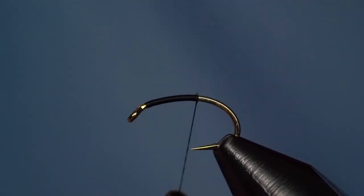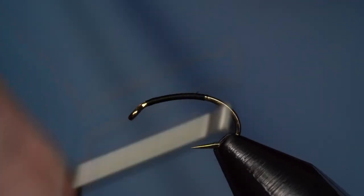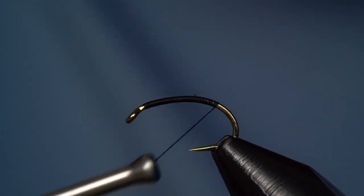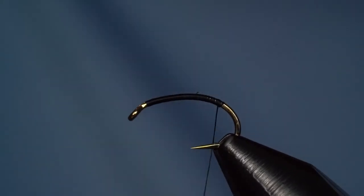We'll start by dressing our hook with that thread. This one is a size 12 today. You can go bigger to a size 10 or maybe a size down as well. Lake cronomids are a pretty good size, much larger than bugs you see in rivers.